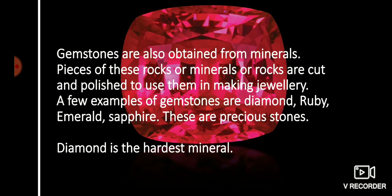Some minerals are known as gemstones — they are also obtained from minerals. Pieces of these rocks and minerals are cut and polished to use them in making jewellery. A few examples of gemstones are diamond, ruby, emerald, and sapphire. These are also precious stones.